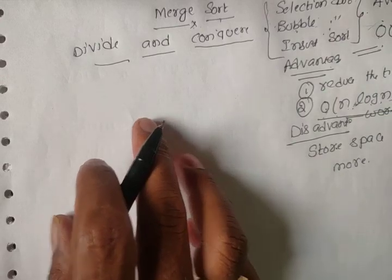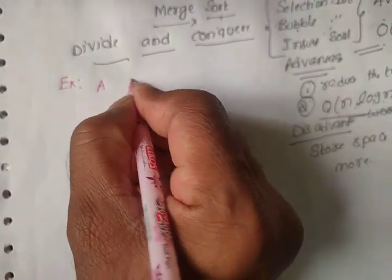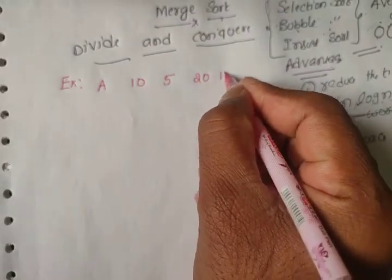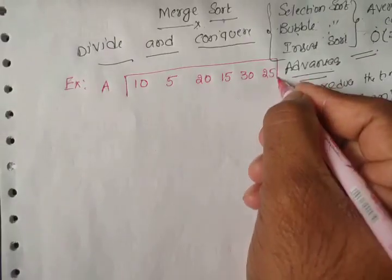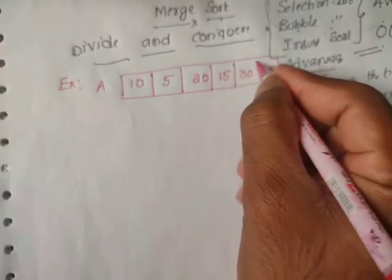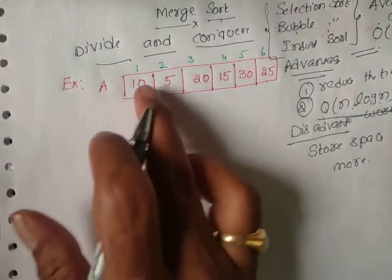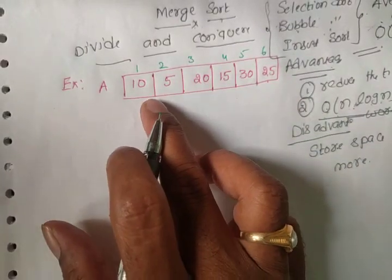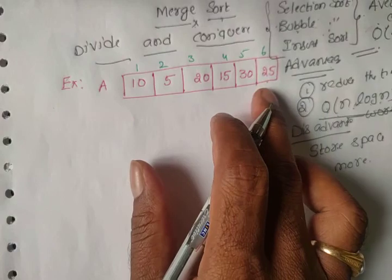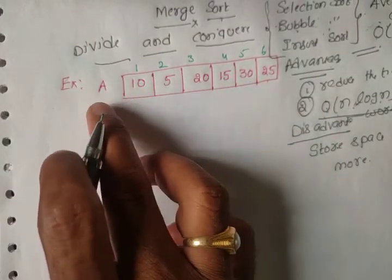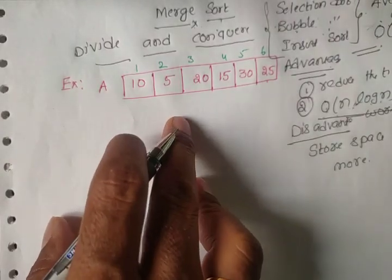I will take one simple example. Here I take one array with values: 10, 5, 20, 15, 30, 25. The index values are 1, 2, 3, 4, 5, 6. In C, Java, or any programming language, index values start with zero, but we are basing this on a simple algorithm.